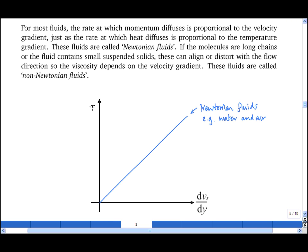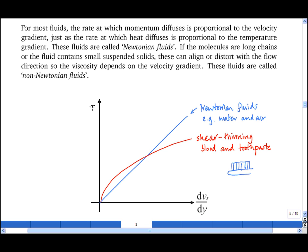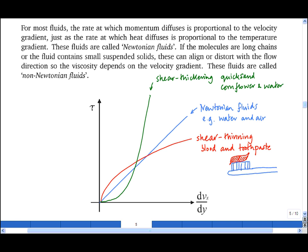In more complex fluids, the shear stress does not vary linearly with the velocity gradient. Some fluids get thinner as velocity gradients increase — these are known as shear thinning, and examples include blood and toothpaste. Toothpaste stays almost solid on your toothbrush when not being sheared, but flows like a liquid when pushed out of the tube. Other fluids, often those containing suspended particles, can be shear thickening — examples include quicksand and cornflour mixed with water — which get more viscous as they are sheared more rapidly because the particles jam up and lock together.